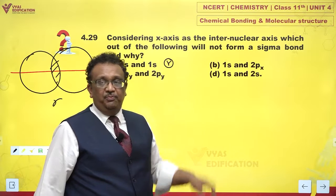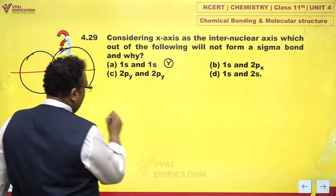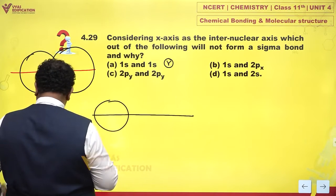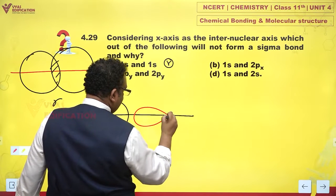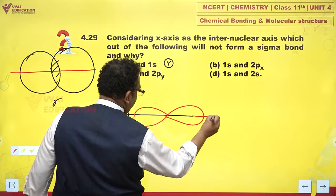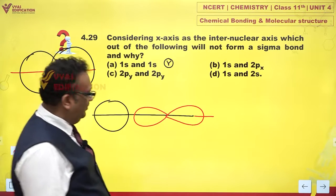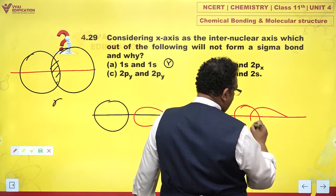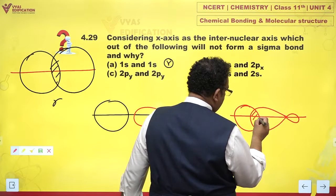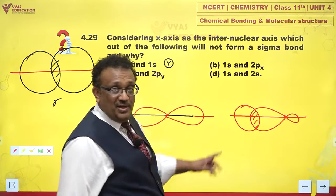1s and 2px, let me check. 1s looks like this and 2px looks like this. If they overlap, will they form a bond? Well, I dare say they very much will like this. So, this is sigma sp overlap.